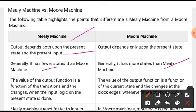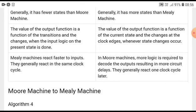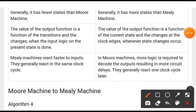In Moore machine, the value of the output function is a function of the current state and changes at the clock edges, whenever state changes occur.